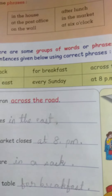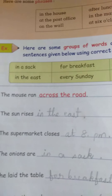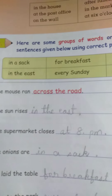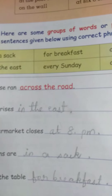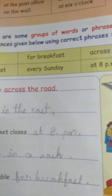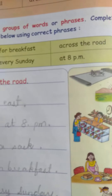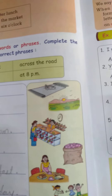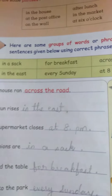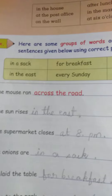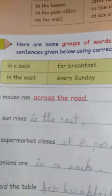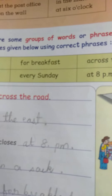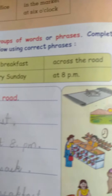They are phrases. Here is our exercise. Here are some groups of words or phrases. Complete the sentences given below using the correct phrases. The options are: in a sack, in the east, for breakfast, every Sunday, across the road, at 8 pm.